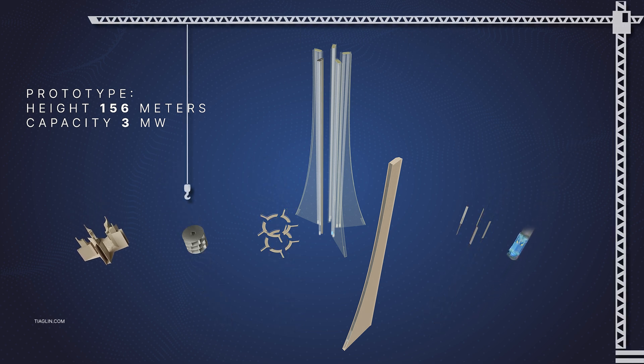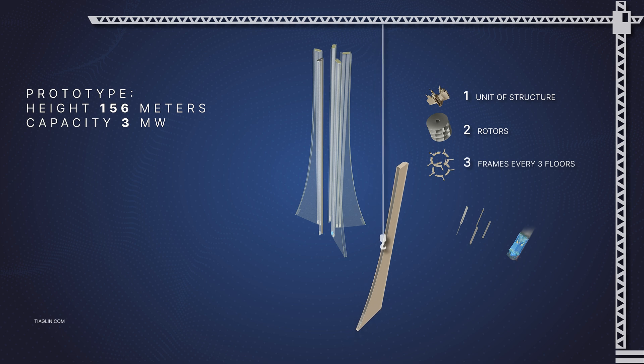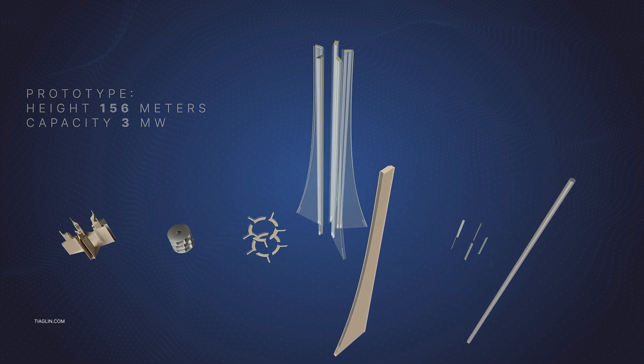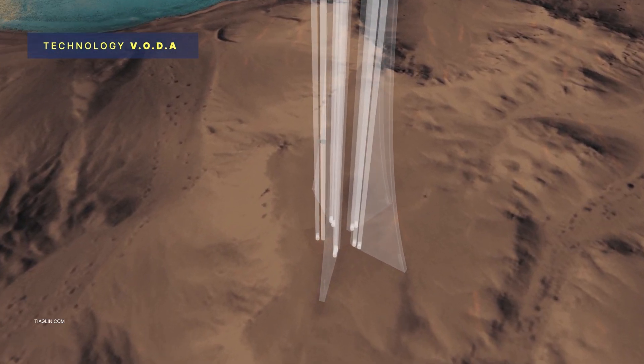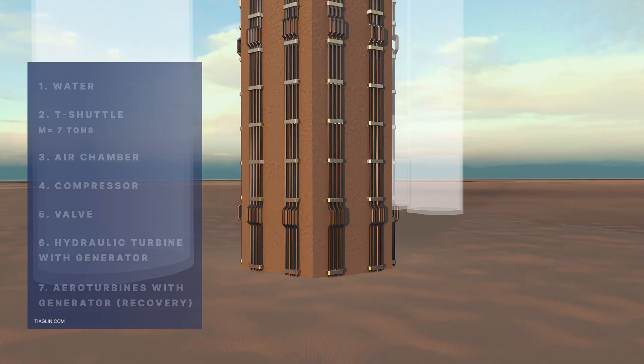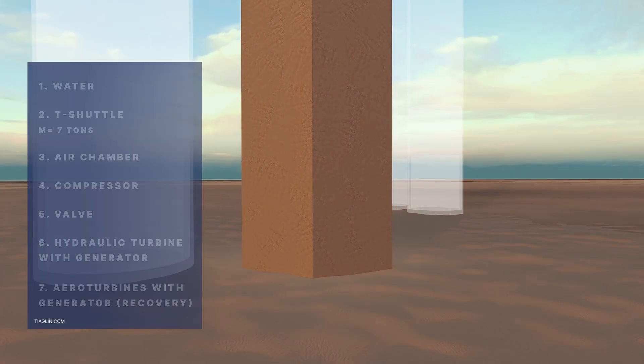The claimed technical solution relates to the field of energy, in particular to hydropower plants, and can be used to generate electricity through the alternate use of gravity and the strength of Archimedes. Vodah Hydro Power Plants are located inside the frame of buildings. Let's consider the principle of operation and what the installation consists of.